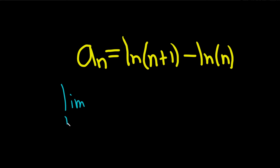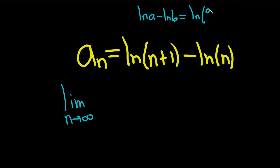So we have the limit as n approaches infinity. There is a property of logarithms that we can use. Recall: if you have ln of a minus ln of b, that's equal to ln of a over b. This is called the quotient rule for logarithms. We can use that in this problem — this is our a and this is our b — so this will be the ln of (n+1) over n.